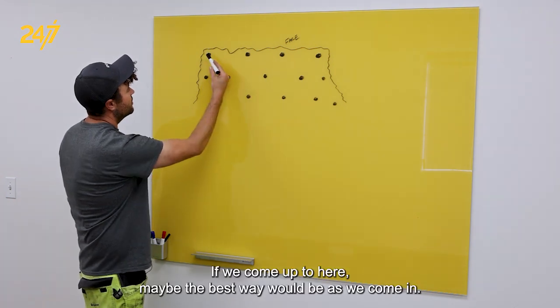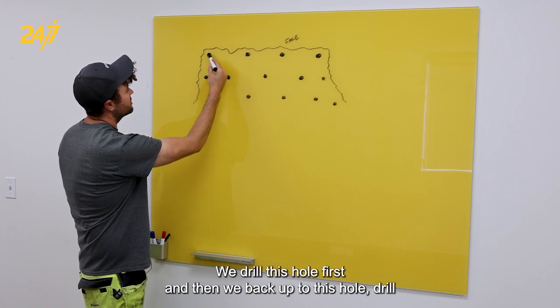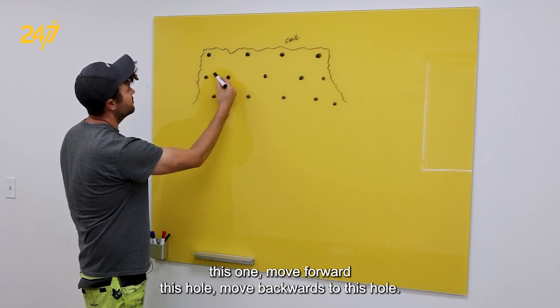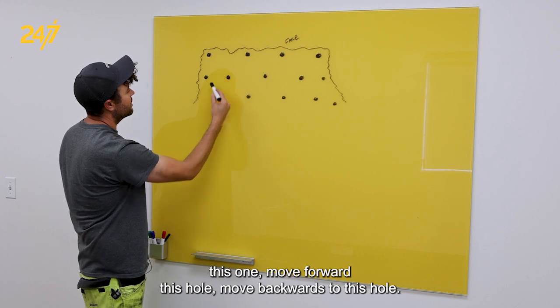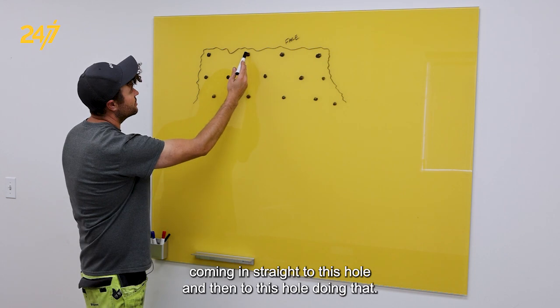If we come up to here, maybe the best way would be as we come in, we drill this hole first and then we back up to this hole, drill this one, move forward to this hole, move backwards to this hole, and then we can re-approach coming in straight to this hole and then to this hole.